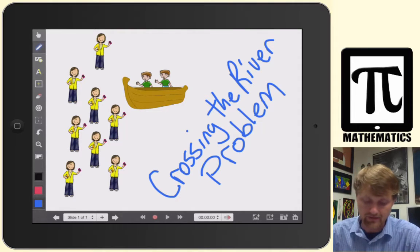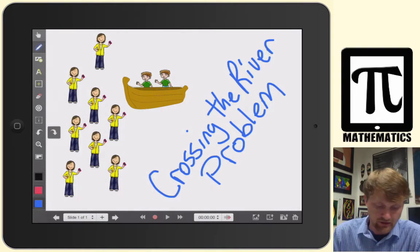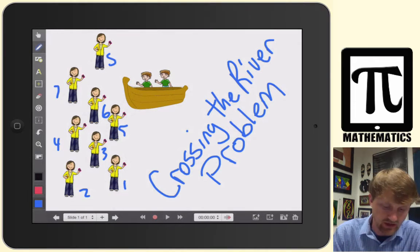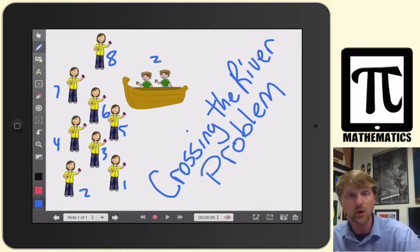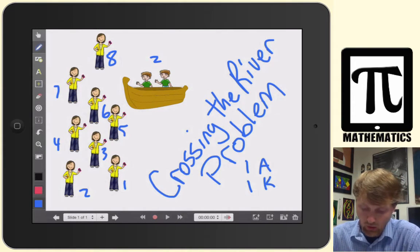So what we have is: we're trying to figure out, if you had eight adults and two kids, and you have a boat that can only hold one adult, one kid, or two kids — that's the scenario. You're trying to find out how many one-way trips it takes to get everybody across the river.